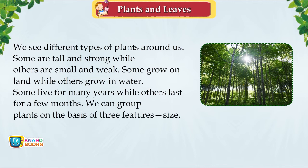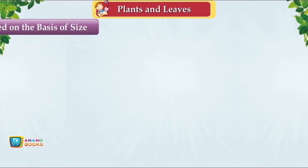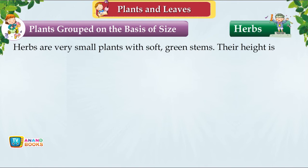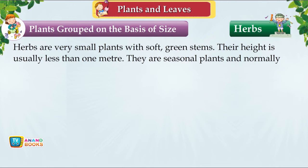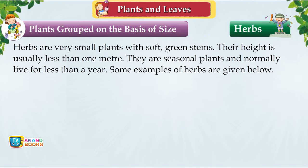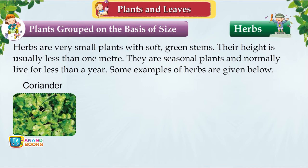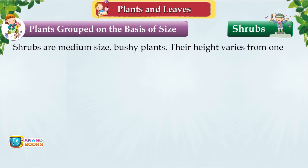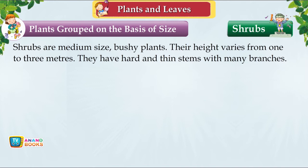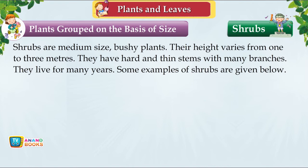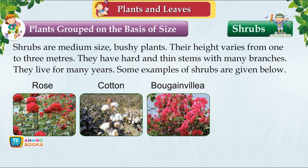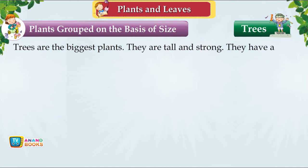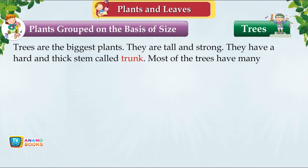Plants grouped by size: Herbs — very small plants with soft green stems, usually less than a metre tall, seasonal and living less than a year; examples: coriander, paddy, wheat, sunflower. Shrubs — medium-sized bushy plants 1–3 metres tall with hard, thin stems and many branches, living many years; examples: rose, cotton, bougainvillea, lemon. Trees — the biggest plants, tall and strong with a hard thick trunk and many branches; examples: mango, banyan, spruce, coconut.